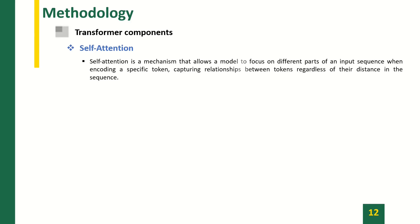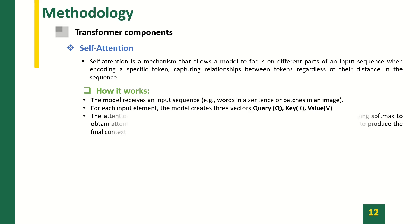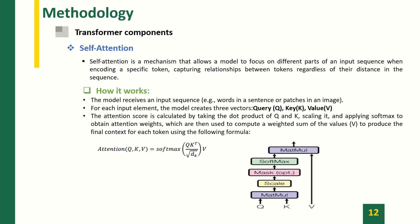Self-attention is a mechanism that allows a model to focus on different parts of an input sequence when encoding a specific token, capturing the relationships between tokens regardless of their distance in the sequence. The model receives an input sequence — for example, words in a sentence or patches in an image. For each input element, the model creates three vectors: query (Q), key (K), and value (V). The attention score is calculated by taking the dot product of Q and K, scaling it, and applying softmax to obtain attention weights, which are then used to compute a weighted sum of the values V to produce the final context for each token, using the following formula.